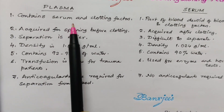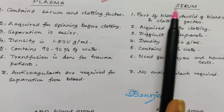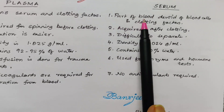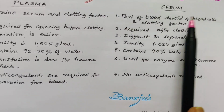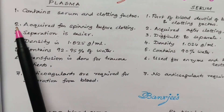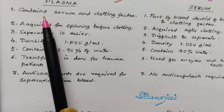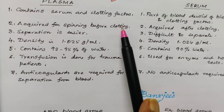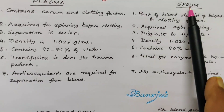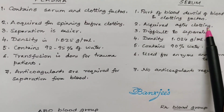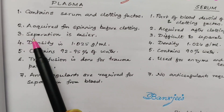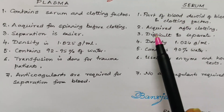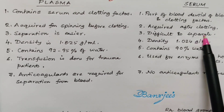Plasma contains serum and clotting factors both. Serum is included within the plasma, and serum is a part of blood devoid of blood corpuscles and clotting factors. Plasma is acquired from spinning before clotting, and serum is acquired after clotting. Separation of plasma is easier, whereas separation of serum is difficult.